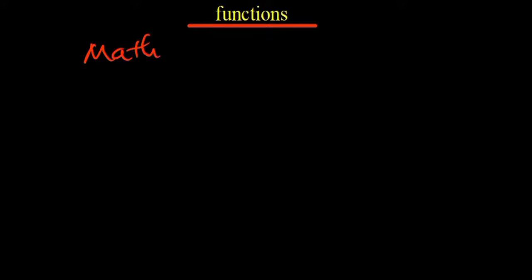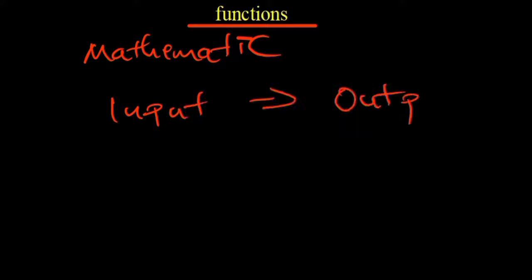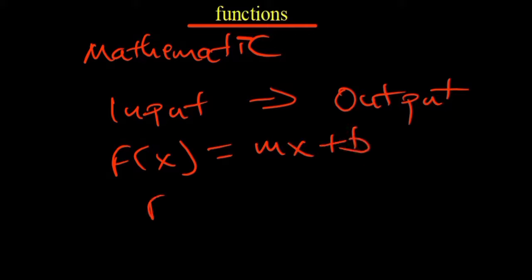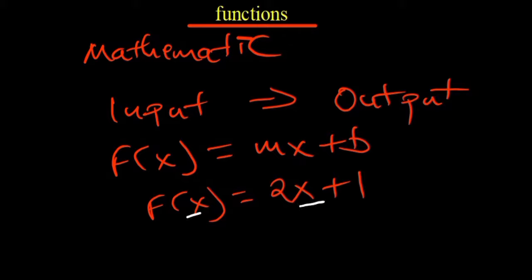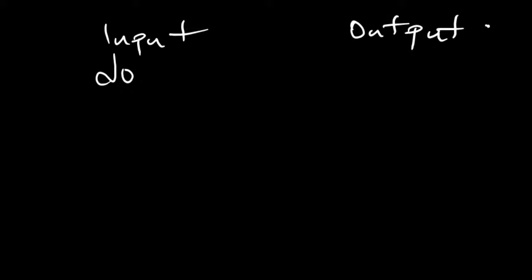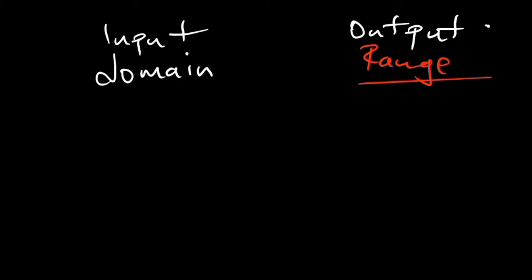A function is a mathematical relationship which has an input and gives us an output. A very good example is a linear function. A function should have an input as well as an output. The input in terms of functions is what we call the domain, and the output is what we call the range — the expected result of a function.